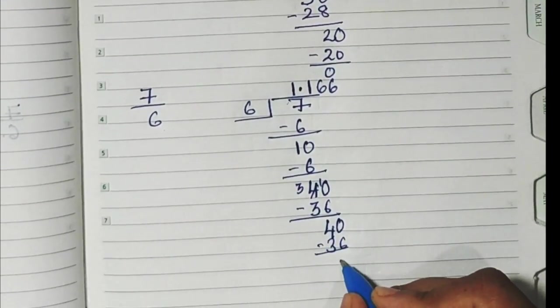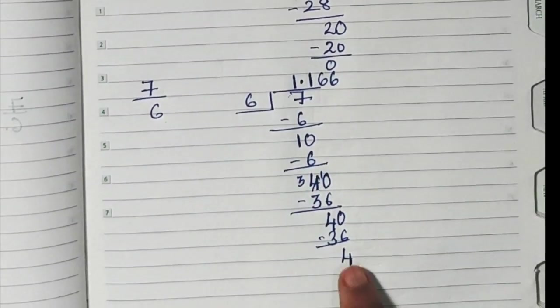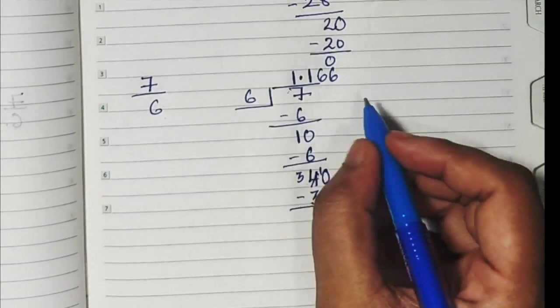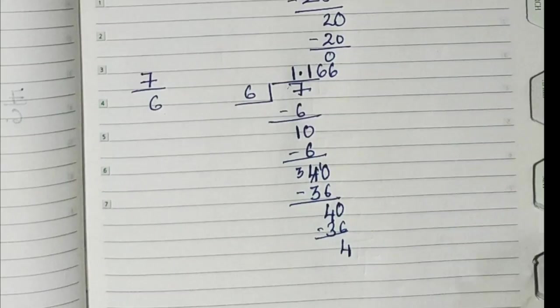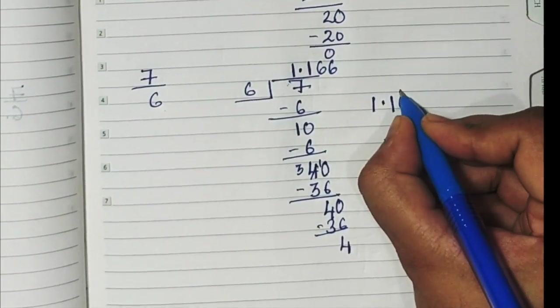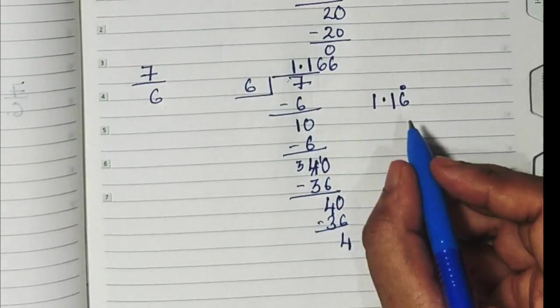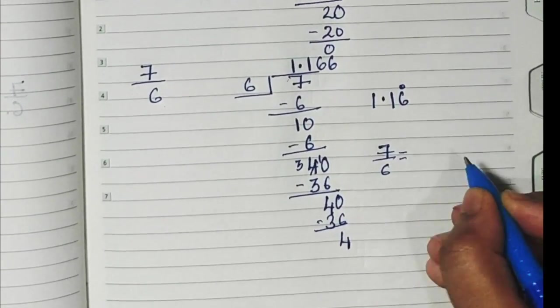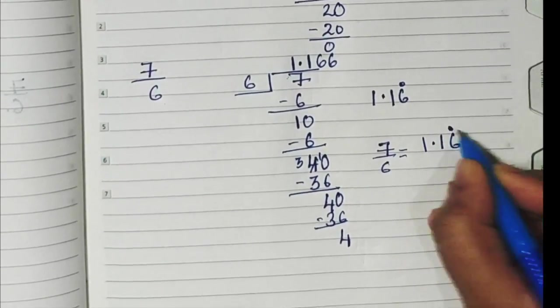Again, 4 remains down, take a 0. Again, 6 will come here, 6 sixes is 36. Basically, again you get a 4. If you go on doing it, you are going to get 6, 6, 6 over here, and this line is going to continue. We stop the answer here because there is no point in doing it. It is going to be repetitive. We write the answer as 1.16 with a dot on top. That means this particular number 6 is going to be repeated.